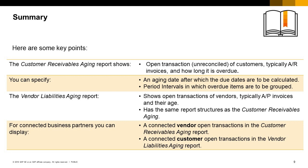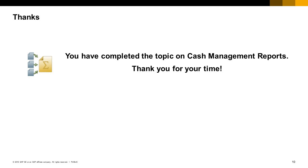Here are some key points to take away. The Customer Receivables Aging Report shows open unreconciled transactions of customers, typically AR invoices, and how long they are overdue. You can specify an aging date after which due dates are calculated, and period intervals in which overdue items are grouped. The Vendor Liabilities Aging Report shows open transactions of vendors, typically AP invoices and their age, with the same report structure. For connected business partners, you can display connected vendor open transactions in the Customer Receivables Aging Report and connected customer open transactions in the Vendor Liabilities Aging Report. You have completed the topic on Aging Reports. Thank you for your time.